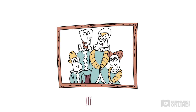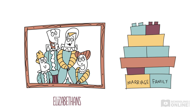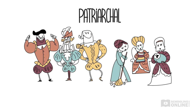Finally, what about Elizabethan views on gender, marriage, and family? We'll be brief here because you can learn more about this in our lesson on gender in Romeo and Juliet. It's important to remember that Elizabethans saw marriage and family as the foundational building blocks of society, and order had to be maintained within the family unit to ensure order on a societal level. Shakespeare's society was patriarchal, which meant that men had all the power and women were expected to be quiet and subservient. In a family unit, the male head of the family was in control and the women had no say.